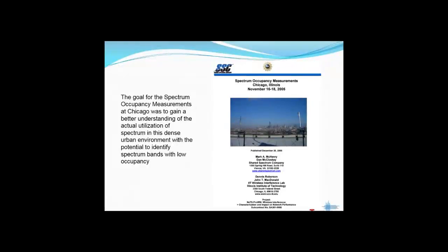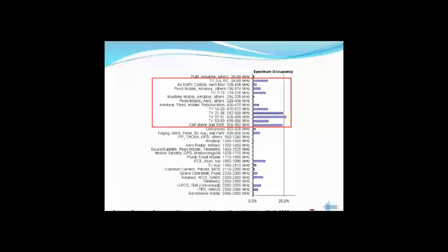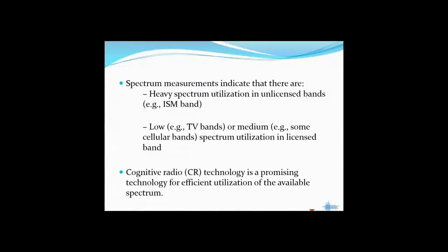On the other hand, in 2005 a survey was done in Chicago to gain a better understanding of the actual utilization of the allocated spectrum. As per the report, many not-so-critical channels like TV bands were underutilized — only 25% of the total TV band spectrum was actually utilized. We can conclude that while there is heavy spectrum utilization in some bands, other spectrum bands have low or medium utilization.